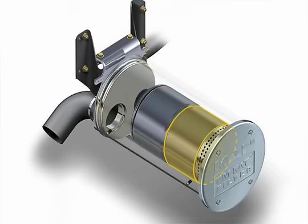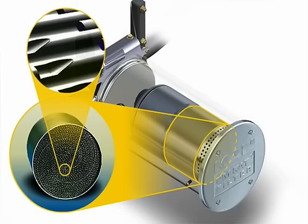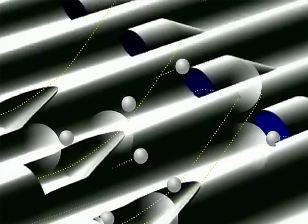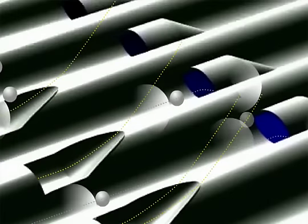During the second stage, particulate matter is separated by the formation of specially triggered turbulence in a sintered metal fabric. The open channel structure keeps the system from becoming clogged or blocked.